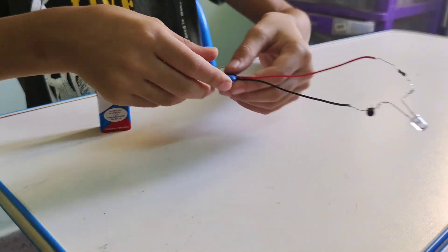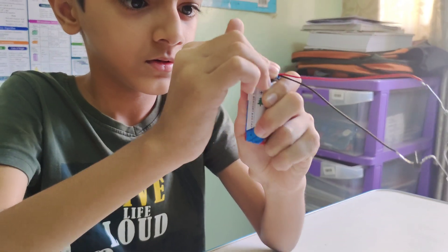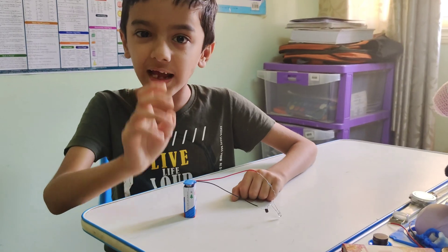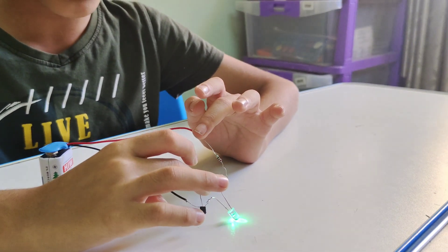Now, we will connect this metal cap to the battery. Now, to light up the LED, we will keep our one finger on the base of the transistor and one finger over here.